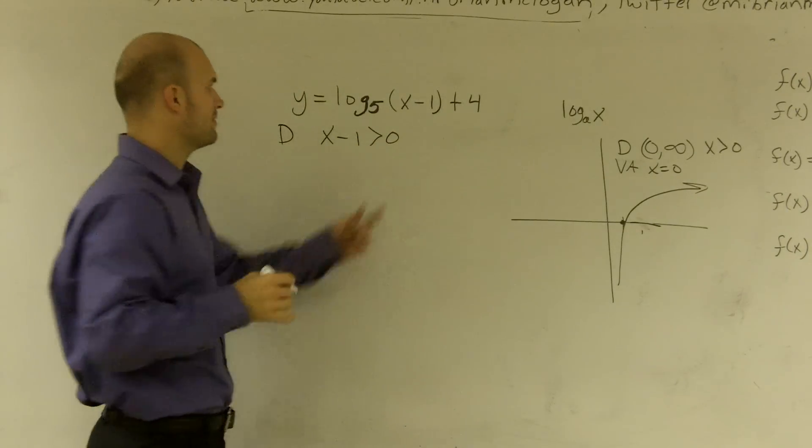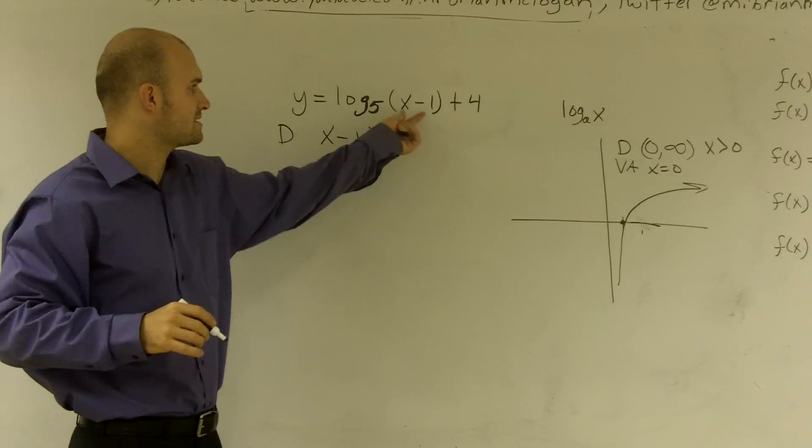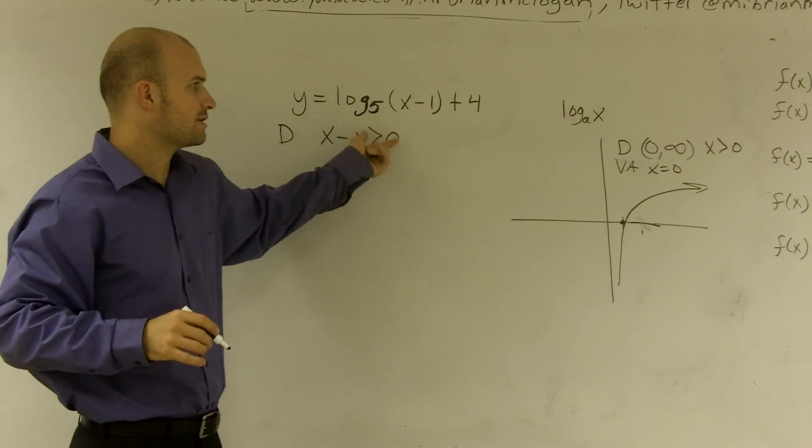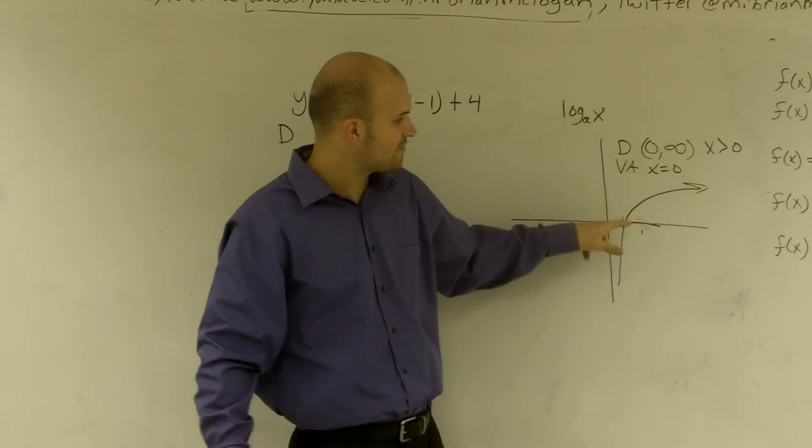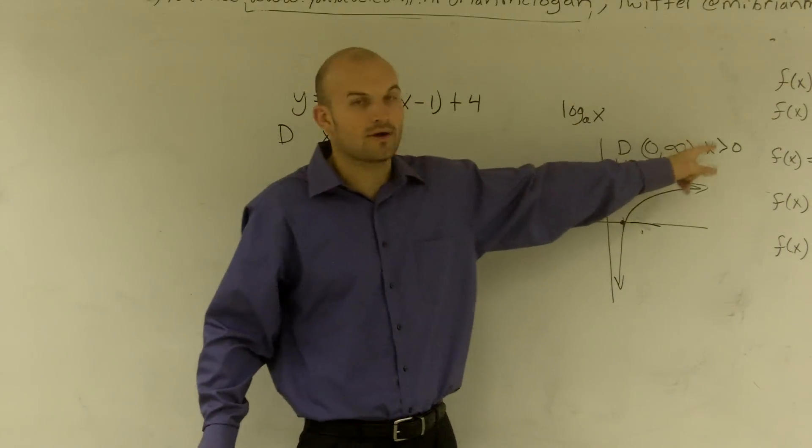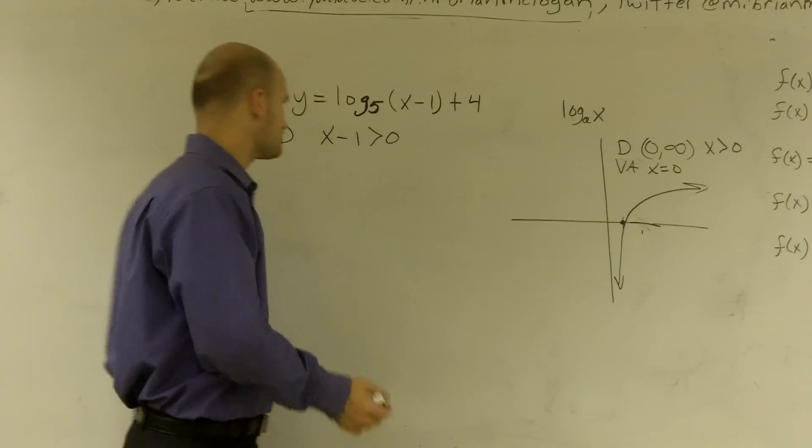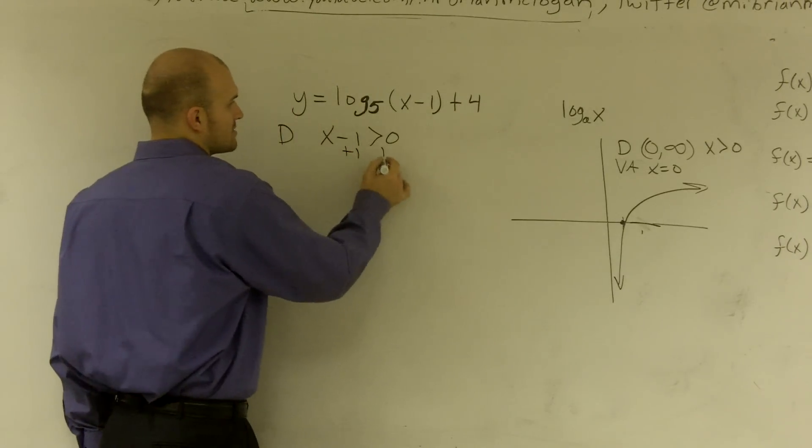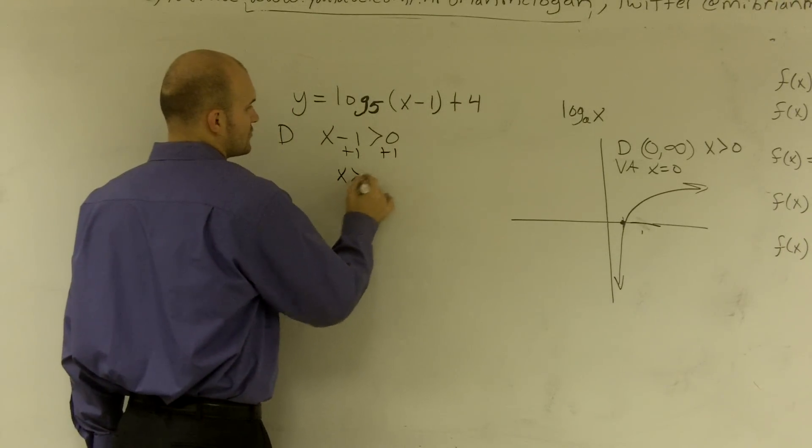So when I want to figure out my domain, I take what's inside my function, x minus 1, and set it greater than 0. Because that's what my domain was for my initial function. So now I can solve for x and say x is greater than 1.